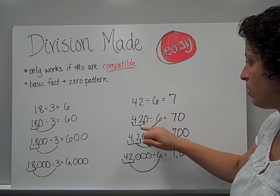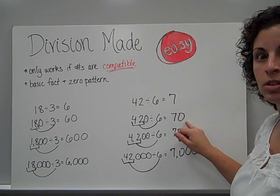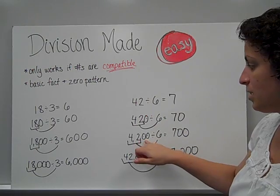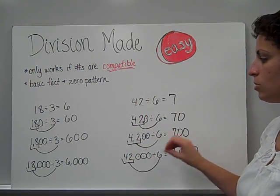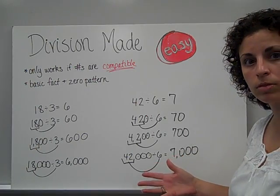When I just had the basic fact, it was 7. When it added 1 zero, my quotient then had 1 zero. When my dividend had 2 zeros, the pattern, 2 zeros in my quotient. And so that's how I know how to solve.